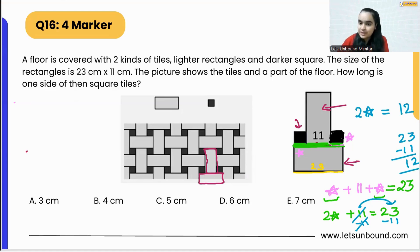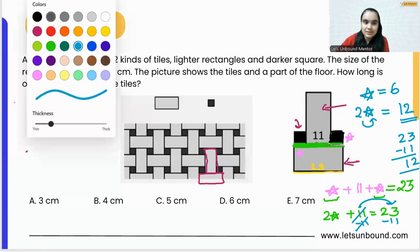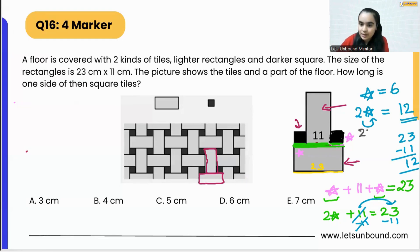If two sides are going to add up to 12, that means the single side is going to be 6 centimeters, because we know that two times six is 12. So that means the length of single side of the square is 6 centimeters, option D is correct.